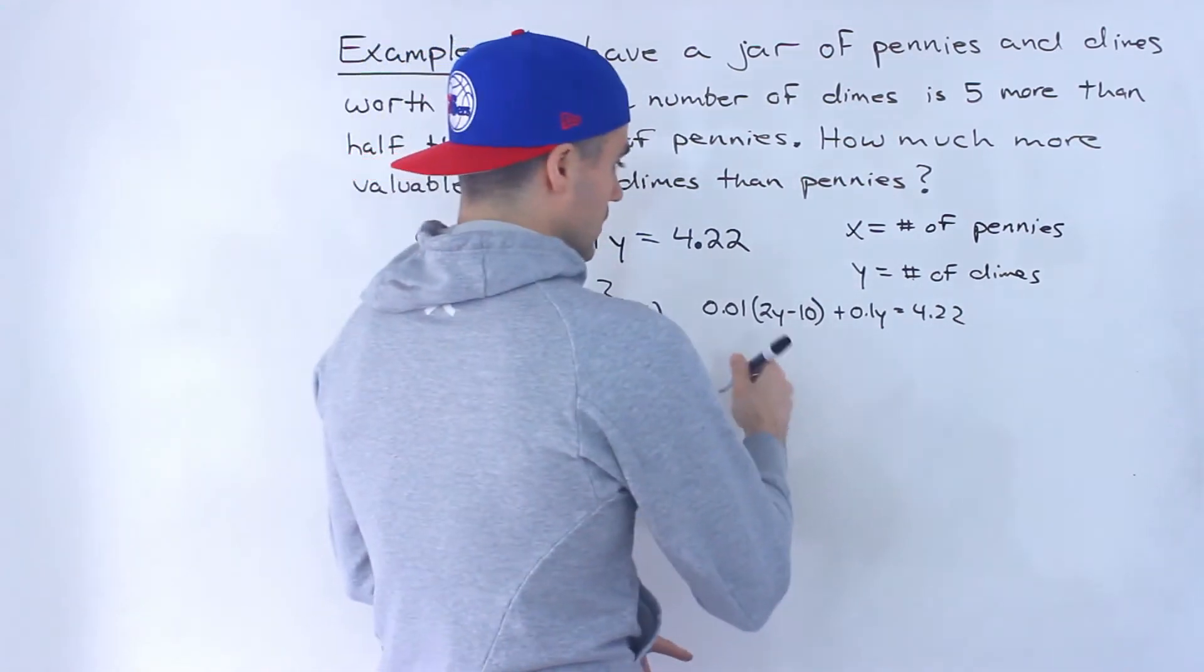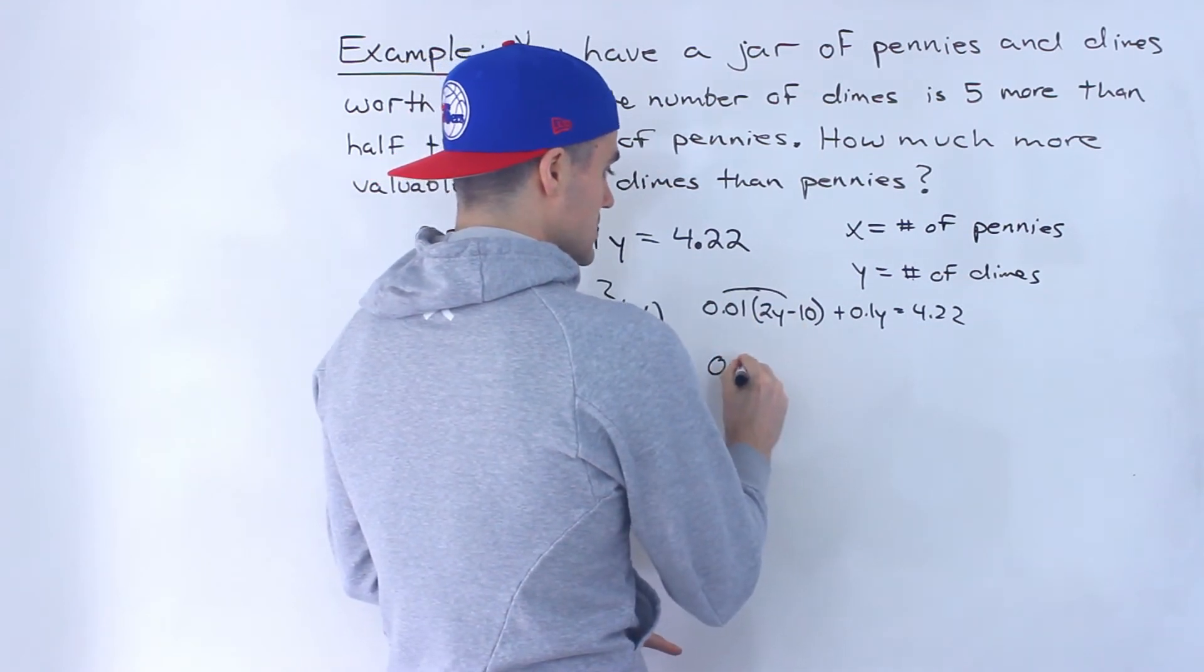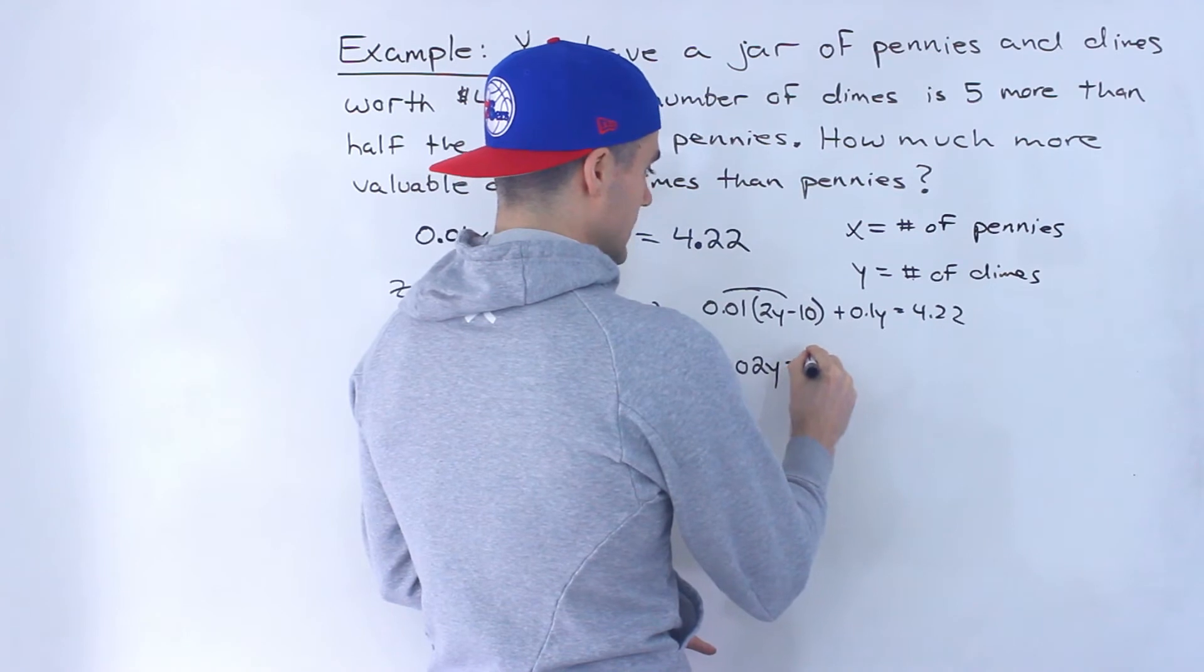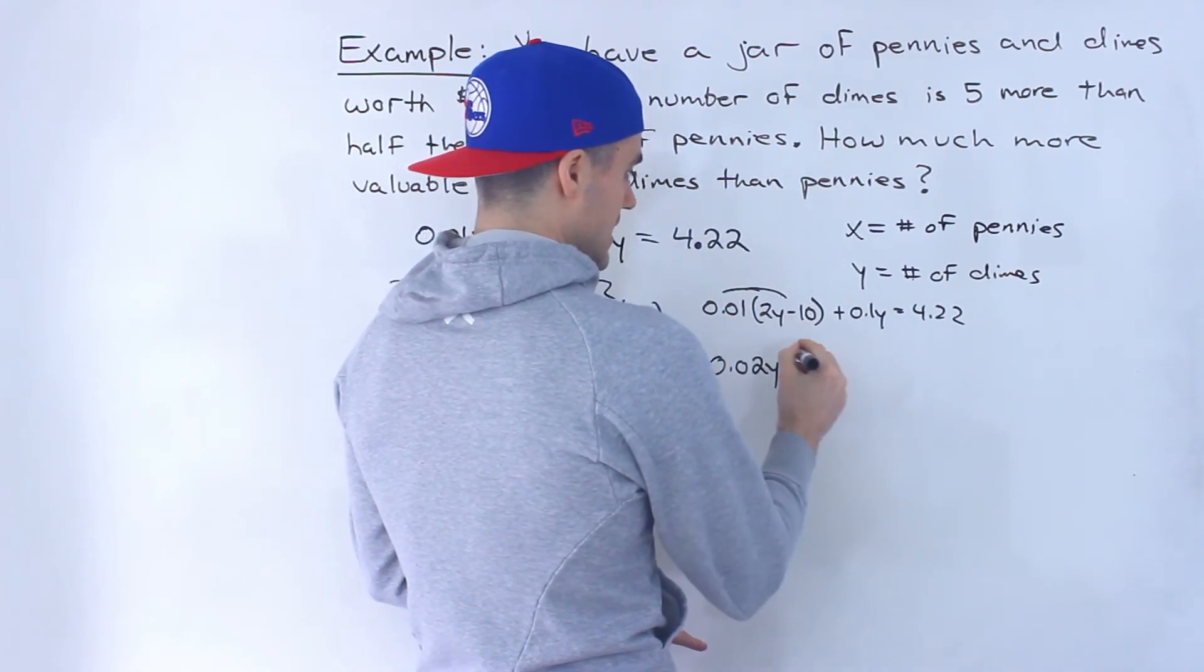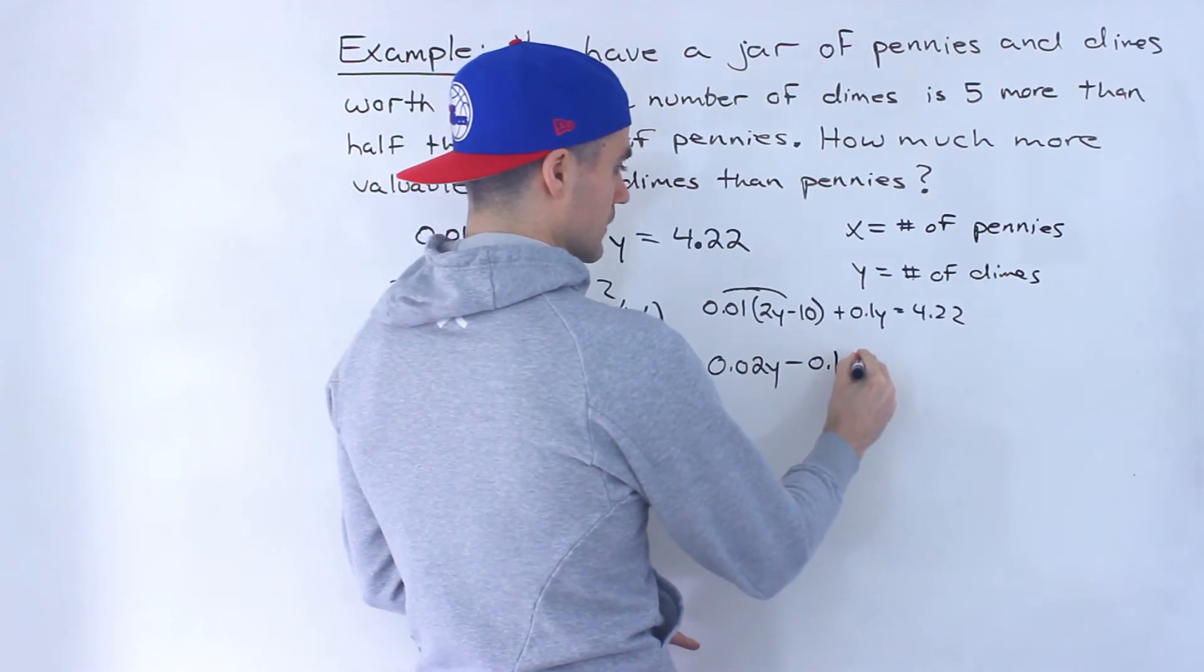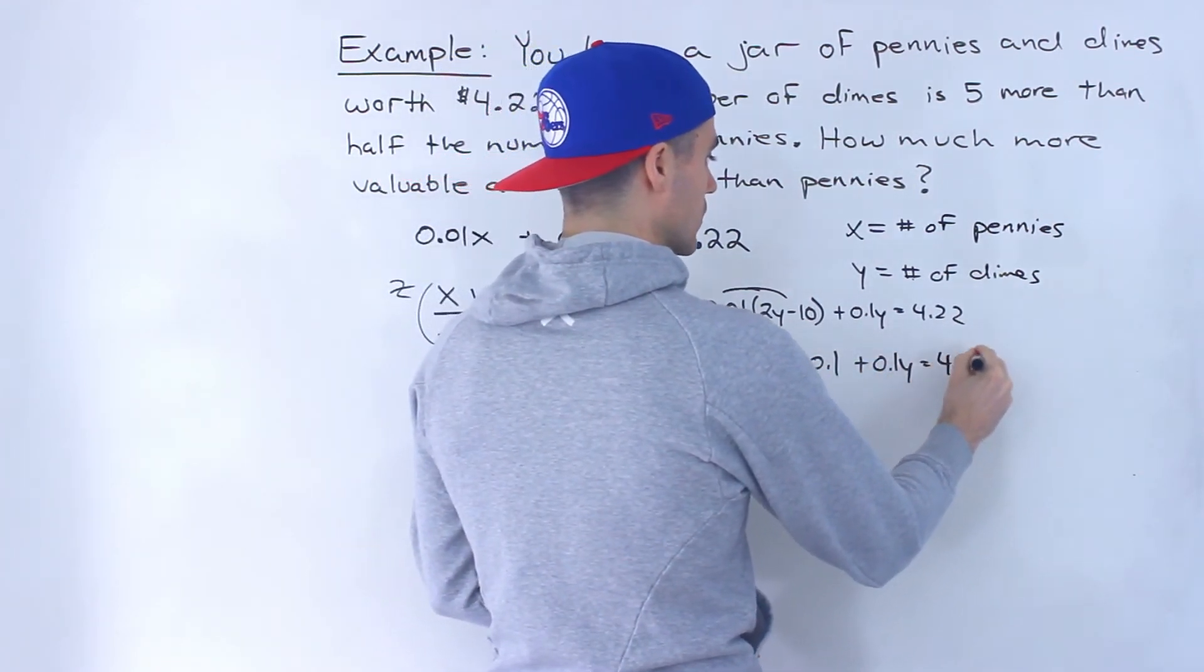So we would have 0.01(2y minus 10) plus 0.1y equals 4.22. So if we distribute here, we would have 0.02y minus—this times that—10 times 0.01 would give us 0.1.